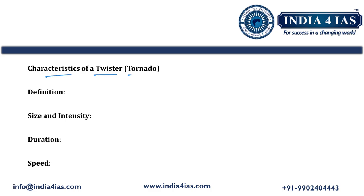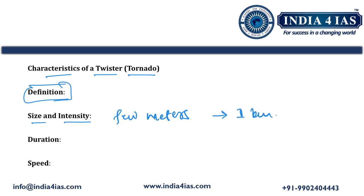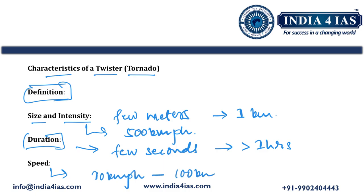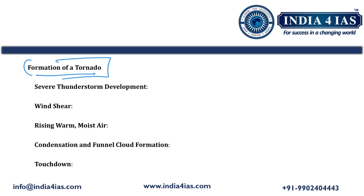Coming to characteristics of a twister: tornadoes can range in width from a few meters to more than a kilometer, and the most violent tornadoes can reach wind speeds of up to 500 kilometers per hour. The lifespan of a twister is usually very short, ranging from a few seconds to more than one hour. The travel speed of tornadoes ranges from 10 to 100 kilometers per hour.